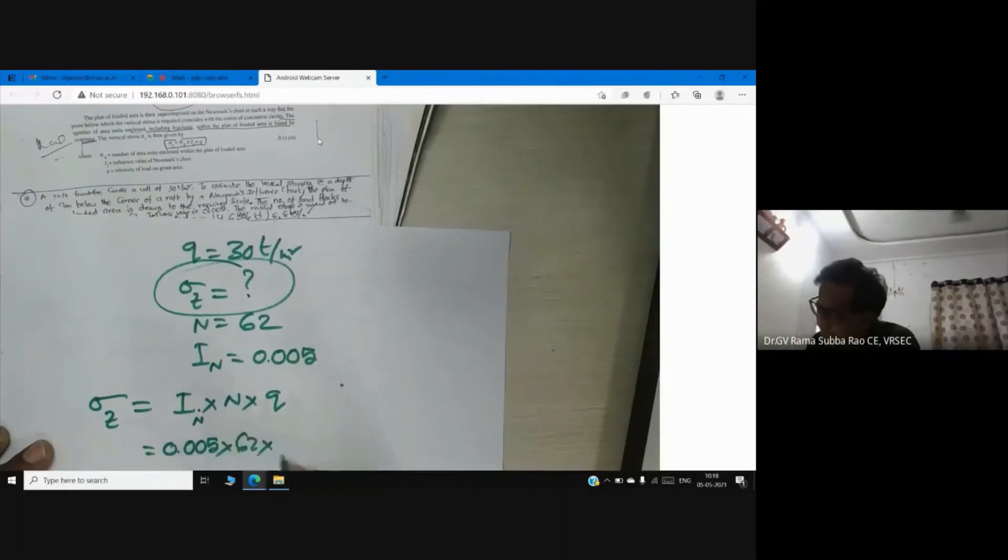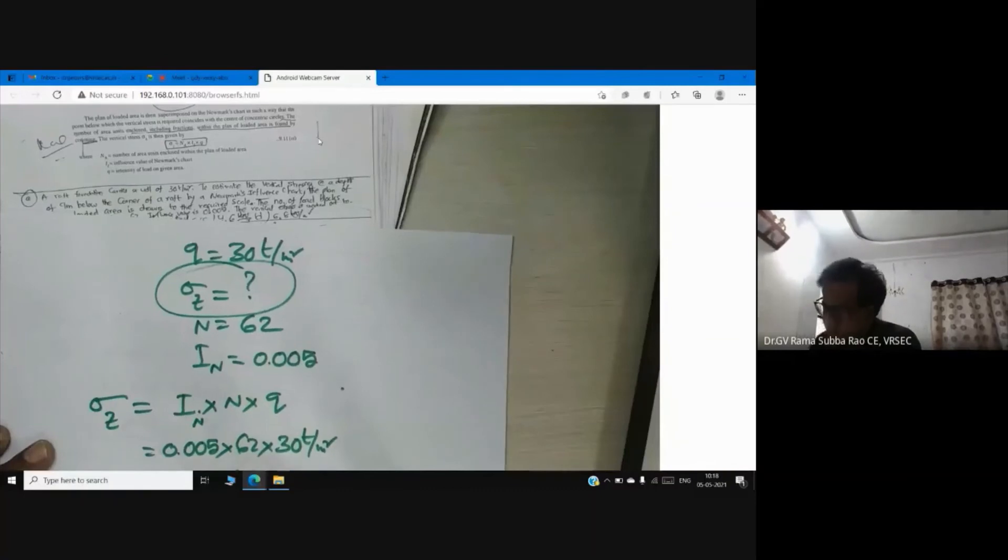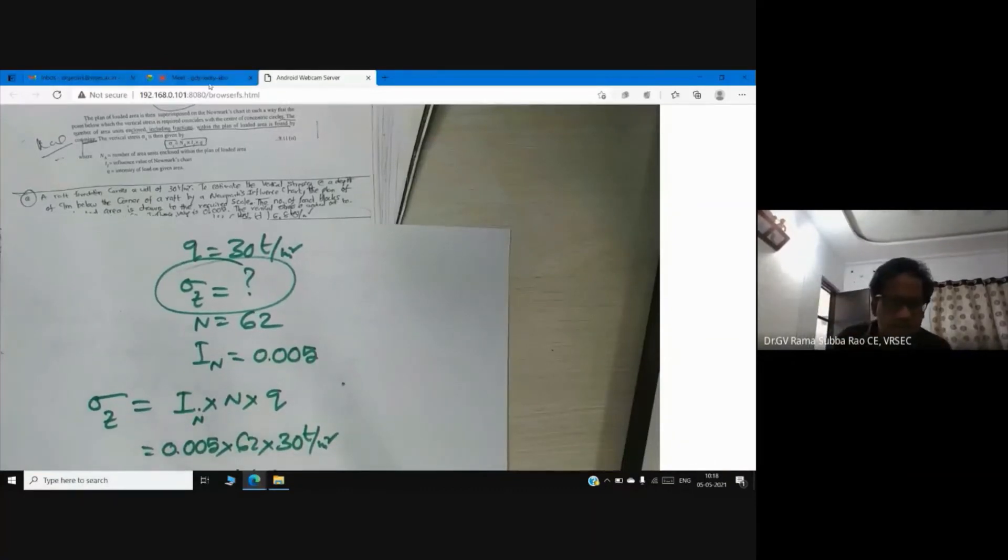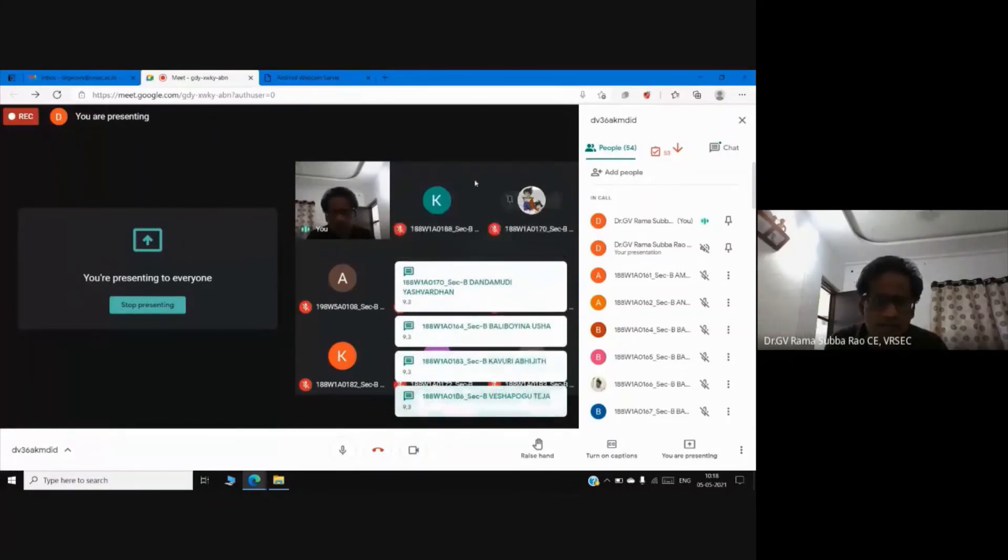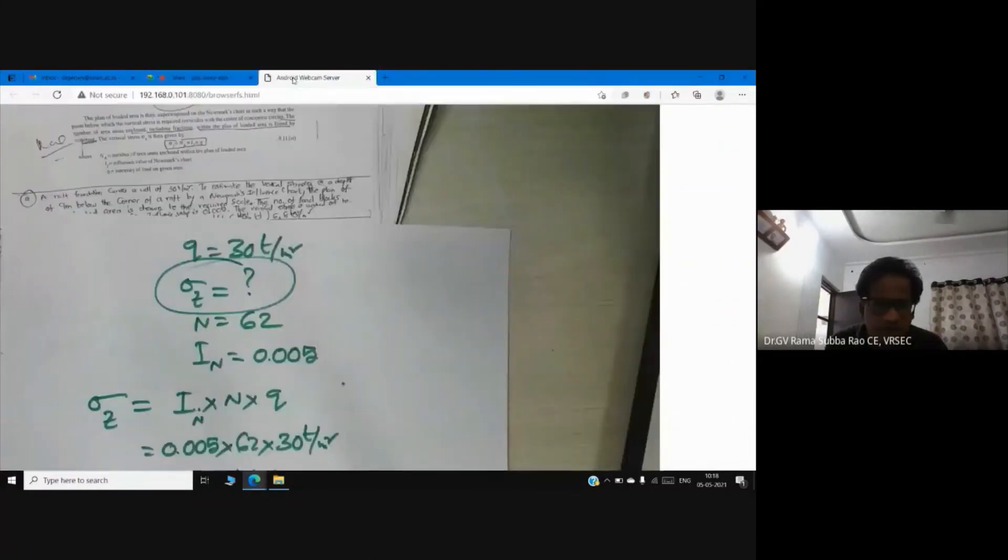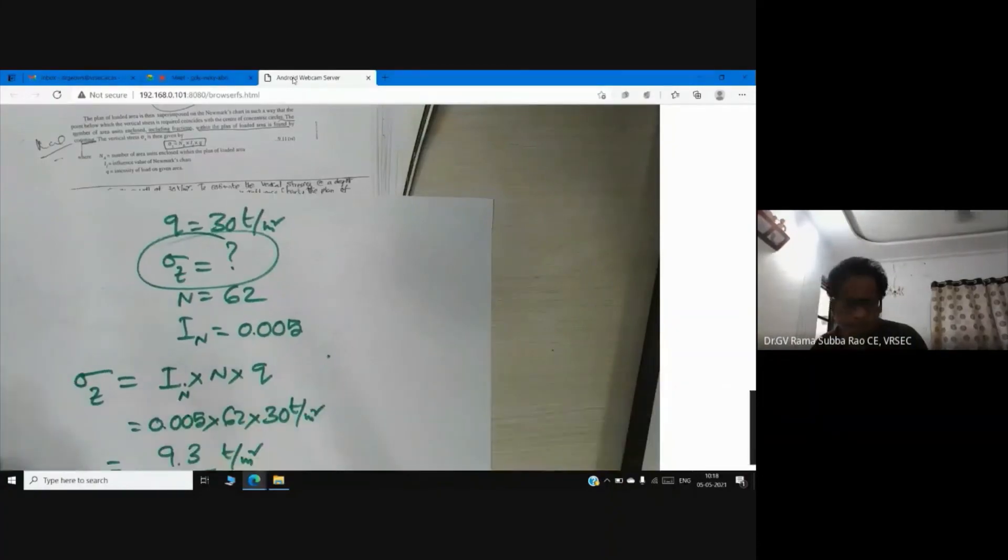...is 62. Intensity of loading is 30 kN per square meter. What is the answer now? So let me check in the chat box—I think many of you have already answered. Yes, here you see the answer. The answer is 9.3.